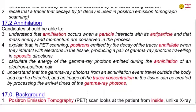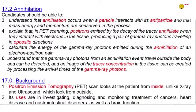We are also going to look at annihilation and the objectives under annihilation are to understand that annihilation occurs when a particle interacts with its antiparticle and that mass energy and momentum are conserved in the process. Also explain that in PET scanning positrons emitted by the decay of the tracer annihilate when they interact with electrons in the tissue producing a pair of gamma ray photons traveling in opposite directions.